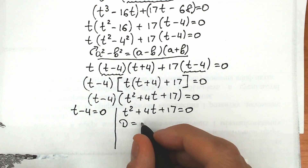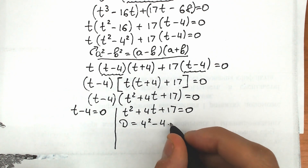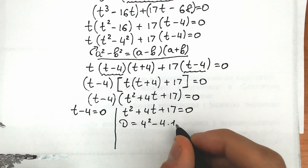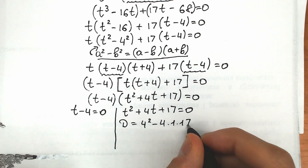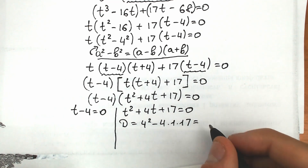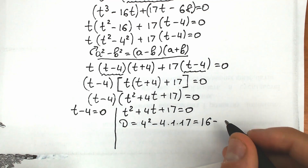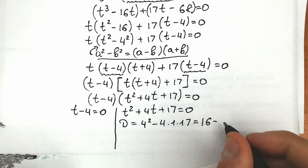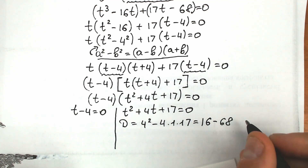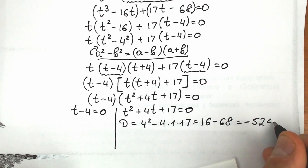The discriminant equals b squared minus 4ac, which is 4 squared minus 4 times 1 times 17, giving us 16 minus 68. As a result, the discriminant equals minus 52, which is less than 0. This means we have two complex roots from this case.